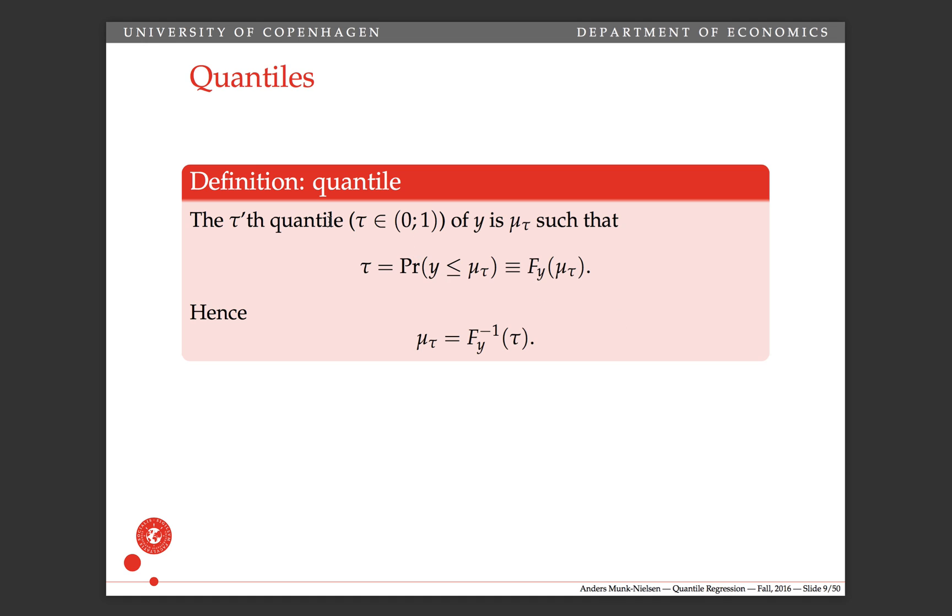The quantile of a stochastic variable y is a number such that tau out of the total mass of y is less than that number. For example, the 0.5 quantile is the number mu 0.5 such that 50% of the probability mass is smaller than tau.